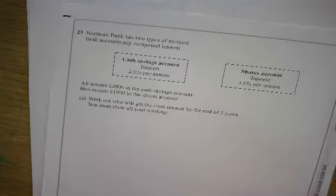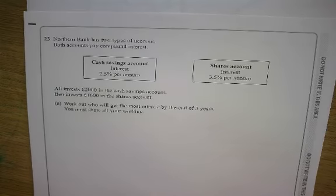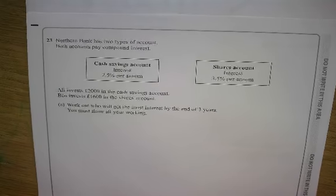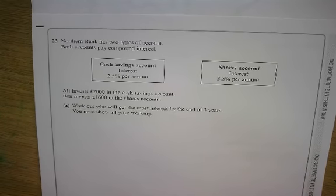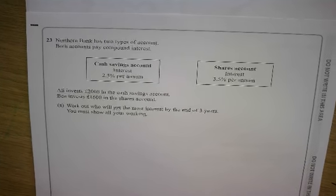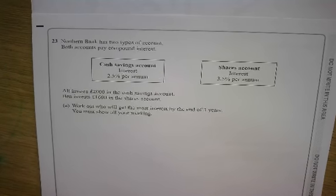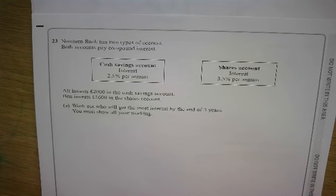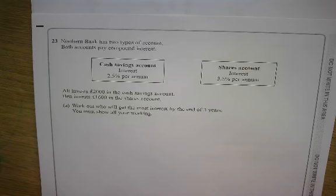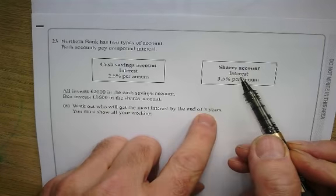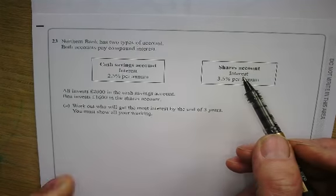So what about question 23? Let's have a go at question 23. Now, Northern Bank has two types of accounts. They both pay compound interest. And that's good. Compound interest is a lot better than simple interest. Ali invests 2000 in the savings account. Ben invests 1600 in the shares account. So this is my savings account, my shares account. Work out who will get the most by the end of three years.